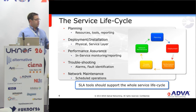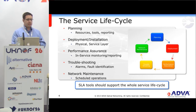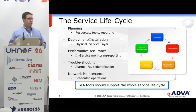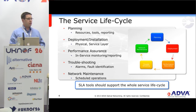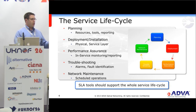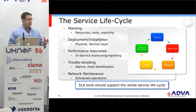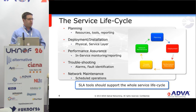Then we move into deployment and installation, where there's a need to look at physical layer and service layer as a bare minimum. Once the network is deployed and things are stable, there's a need to move into a performance assurance role — in-service monitoring and reporting on network performance. And then if things go wrong, you need to go into a troubleshooting mode where you can suppress alarms, put modes into a test routine, and do some fault identification. Finally, if you've got planned maintenance windows, you need tool sets to support those. The summary is: to achieve a service-level agreement, you need tools that enable you to complete the whole service lifecycle.